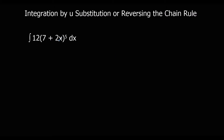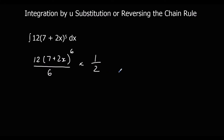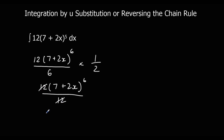Same thing again here. We're going to integrate around the bracket normally — so we'll add 1 to the power, so 5 will go to 6, and divide by the new power. Then we divide by the bracket differentiated, which is 2, so we times by a half. That gives us 12 times (7 + 2x)^6 over 12, so the 12s cancel, leaving us with (7 + 2x)^6 plus c.